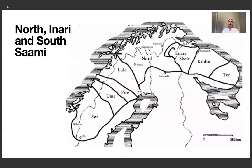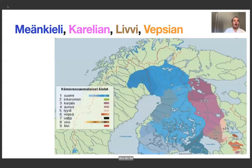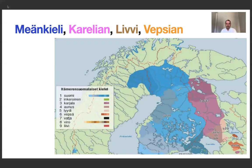Just to introduce the Sami languages: the South Sami languages are in the southern part of Scandinavia, the North Sami languages — mind you, being taught in three different countries — and the Inari Sami, quite a small area in the northeastern part of Finland, as you can see from the map. Also looking at the other languages in the Nordic countries: the dark blue on the Swedish side is Meankieli, which means 'our language.' Then Karelian in violet, and Livi — according to some a dialect of Karelian, but they have their own Wikipedia, so they are here — and Vepsian, the orange one down right there.